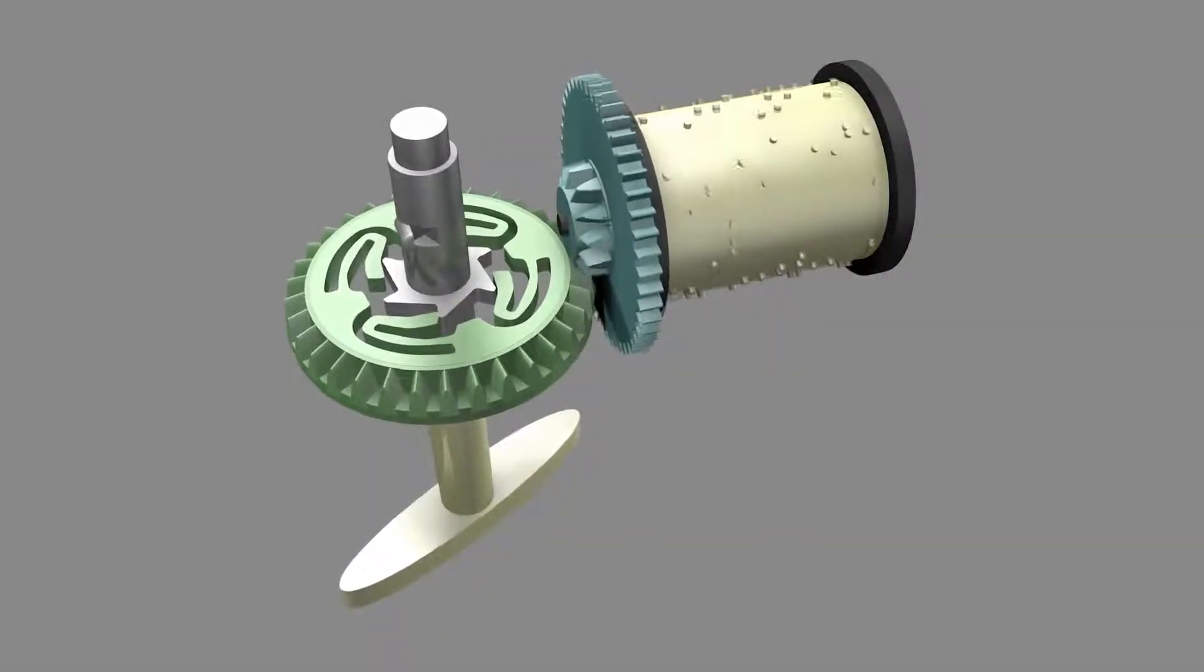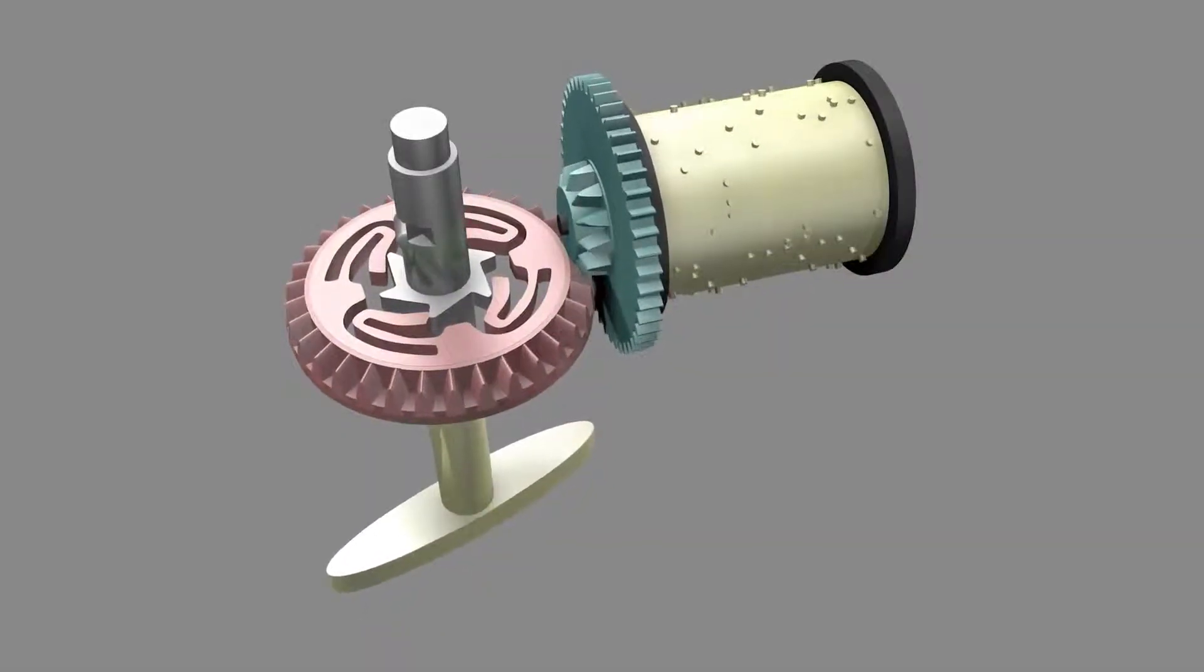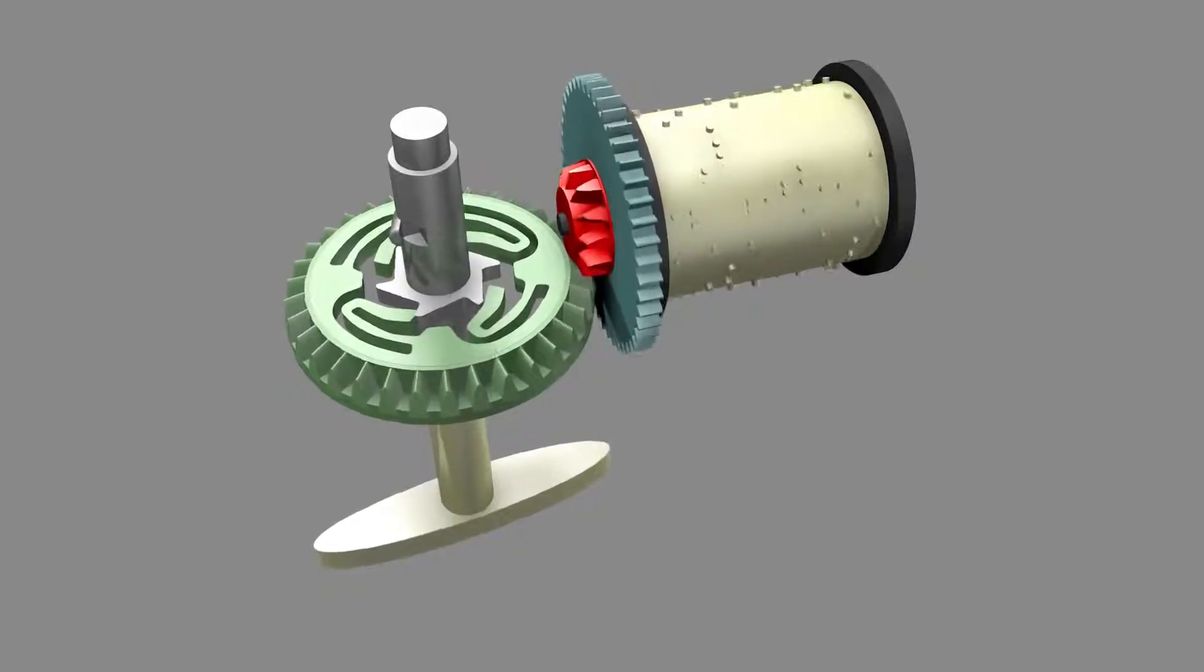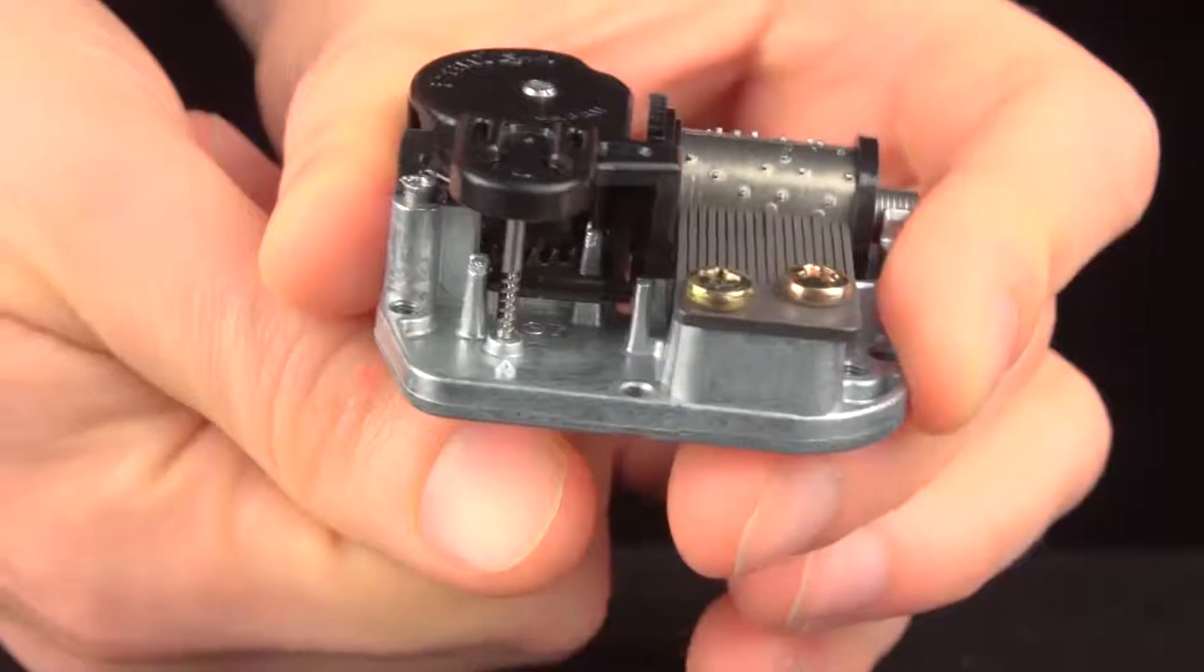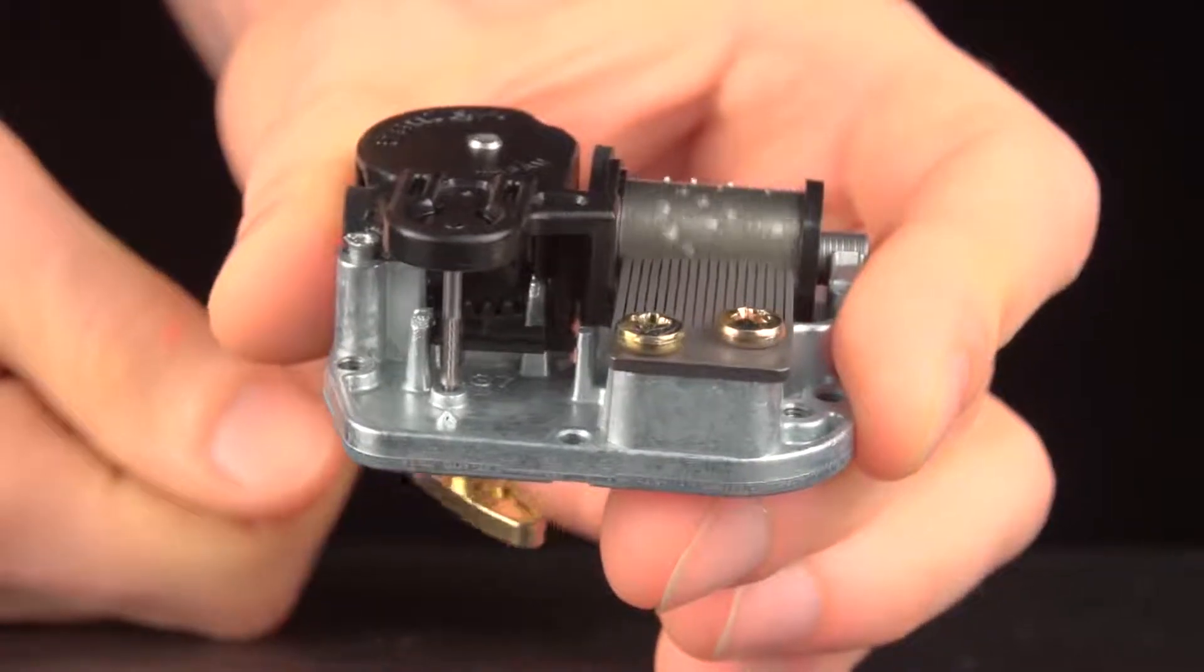As the spring unwinds, it rotates this bevel gear, which engages a second bevel gear affixed to the drum. But there's a problem with this setup. The spring will unwind quickly and the music will play too fast.